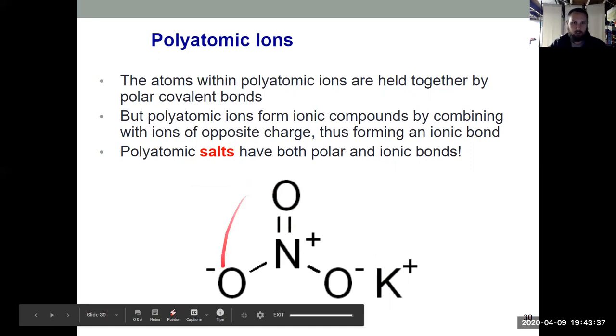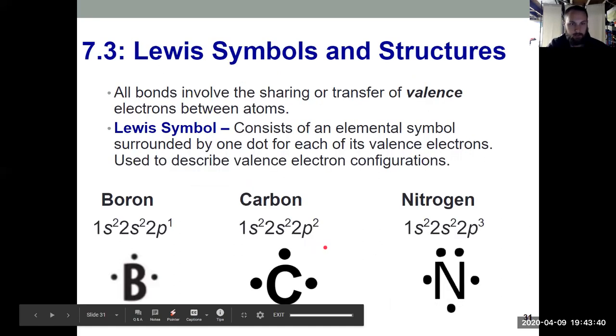That brings us to looking at this structure here: Lewis symbols, and then in our next video, Lewis structures. As we talked about in the first video from this chapter and in Chapter 6 as well, when we're forming chemical bonds, we are sharing or transferring valence electrons. So we use Lewis symbols as a convenient way to show valence electron configurations. If I think about boron, it's the highest principal quantum number, so it's just the n equals two that are my valence electrons. Carbon over here, nitrogen. They have three, four, and five valence electrons, respectively.